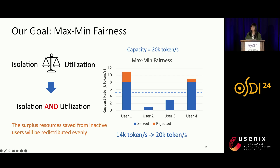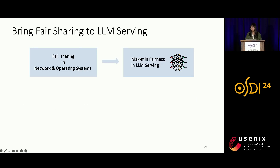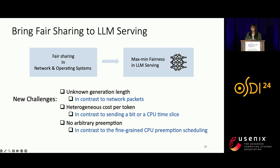This is a general pattern in other domains like networking and CPU scheduling. We can borrow definitions and ideas to deal with fairness in LLM serving, but there are also new challenges. In LLM generation, the number of generated tokens is unknown in advance, in contrast to network packets which have fixed size. The cost of each token in LLM serving could be different, especially for input and output tokens. Also, frequent preemption is not desirable, in contrast to fine-grained CPU preemption scheduling.